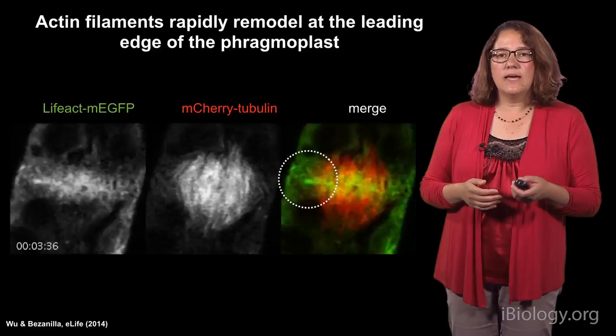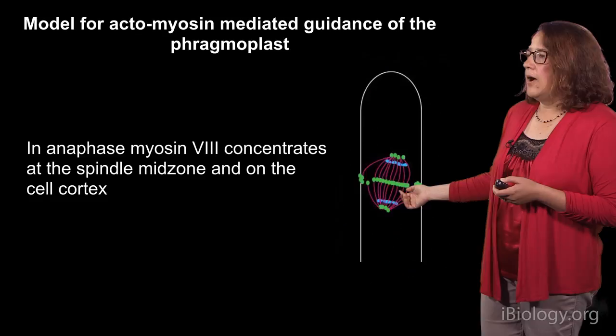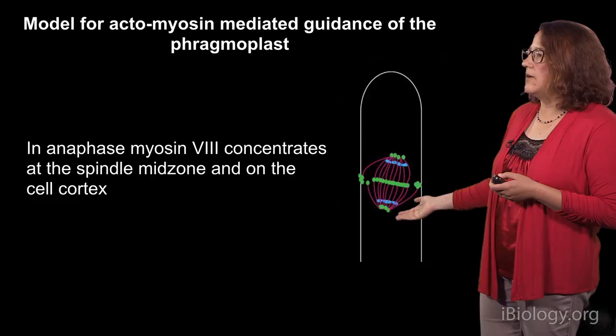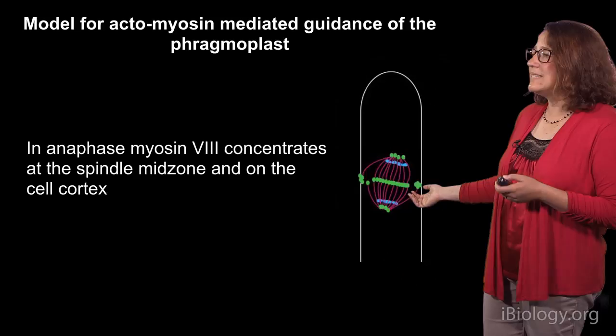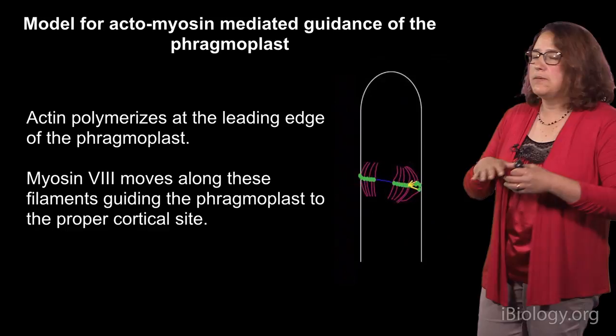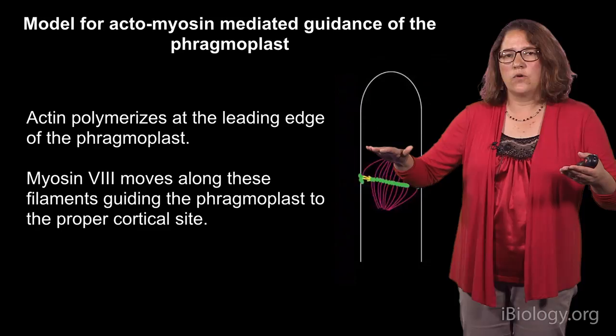This led us to a model where myosin 8 binds to the mitotic spindle essentially as a way to get to the right place and be there at the right time. Then in anaphase, myosin 8 concentrates at the cell cortex, and also in the middle of the spindle and the poles — though we don't understand the polar concentration yet. As this turns into a phragmoplast, actin gets polymerized off of the middle toward the cell cortex where myosin 8 can hold on to it, making a network that the microtubules connect to and incorporate along the correct plane, allowing cell division to occur properly.